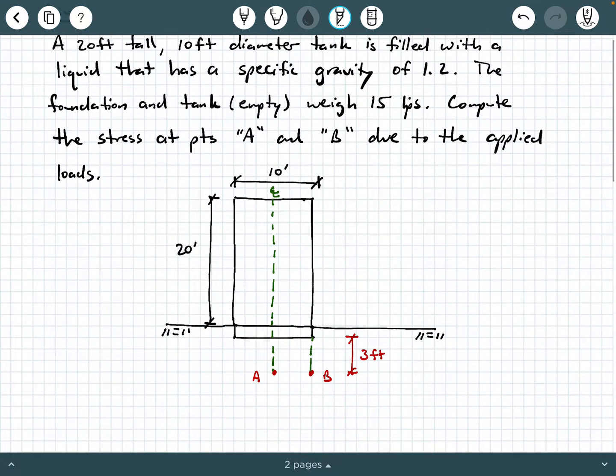Let's take a look at the given figure. Here we have this tank that's 20 feet tall and has a 10 foot diameter. When it's empty, its weight plus the weight of the foundation is 15 kips. Now it's actually full of this liquid that has a specific gravity of 1.2, so when we get our calculations going, we're gonna have to calculate something involving that liquid.